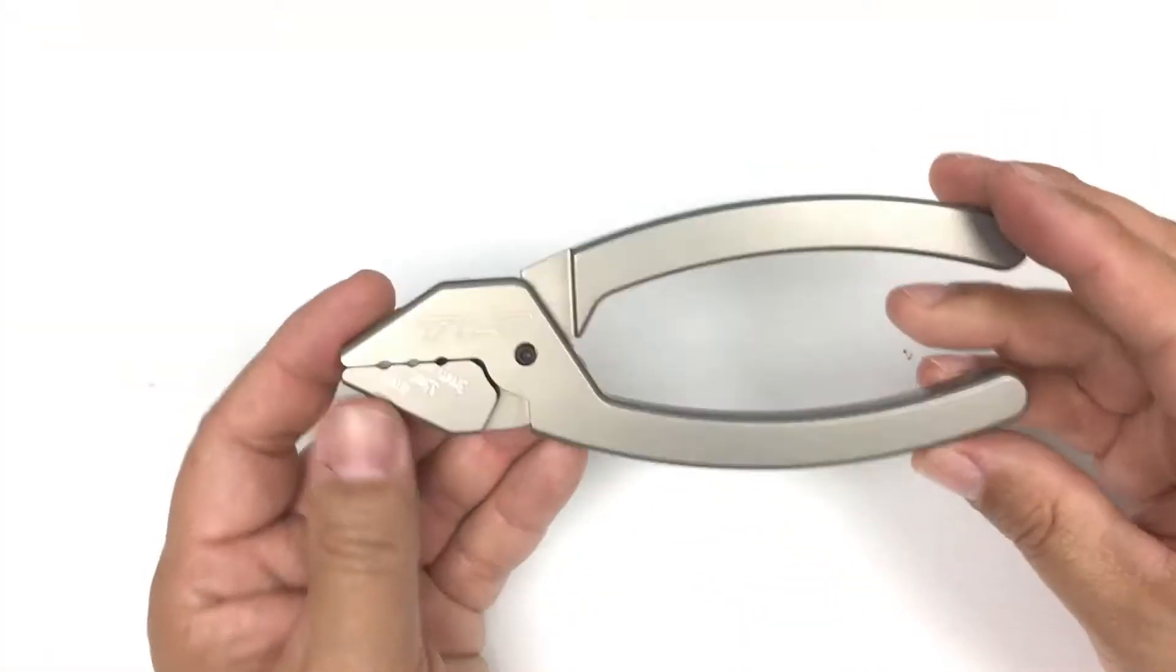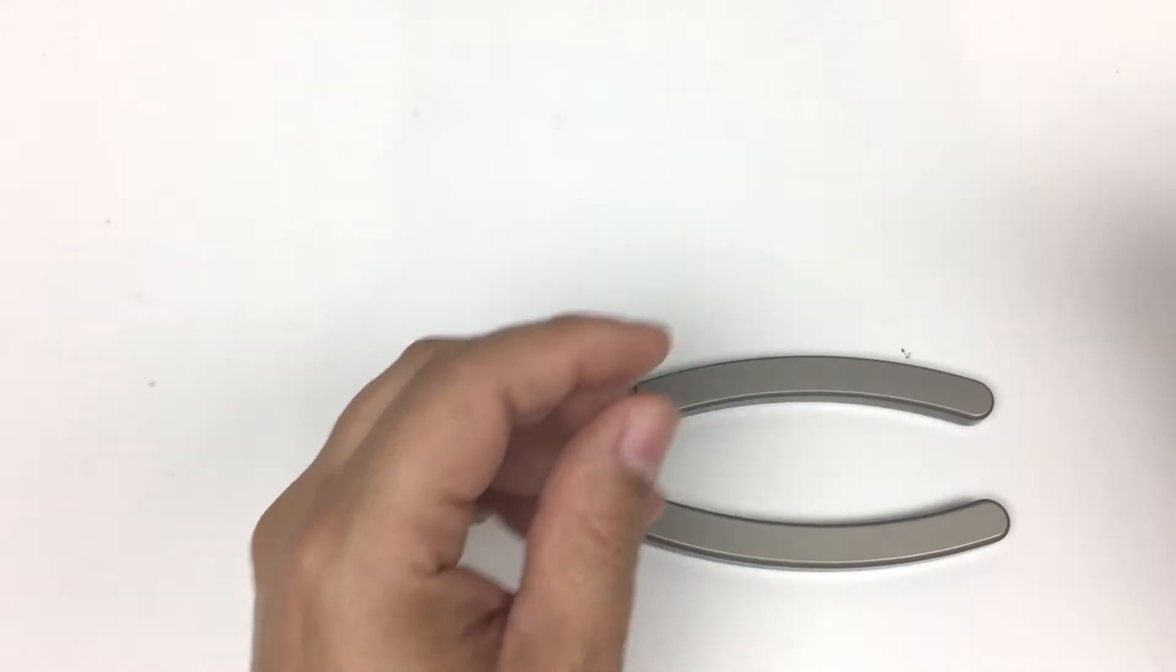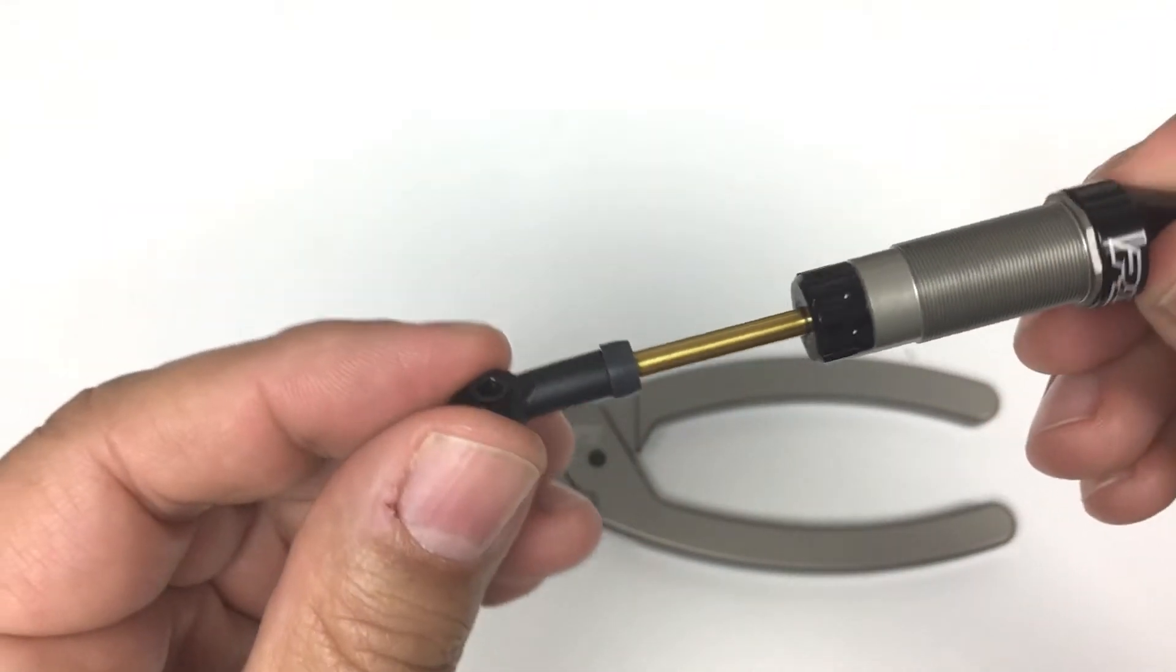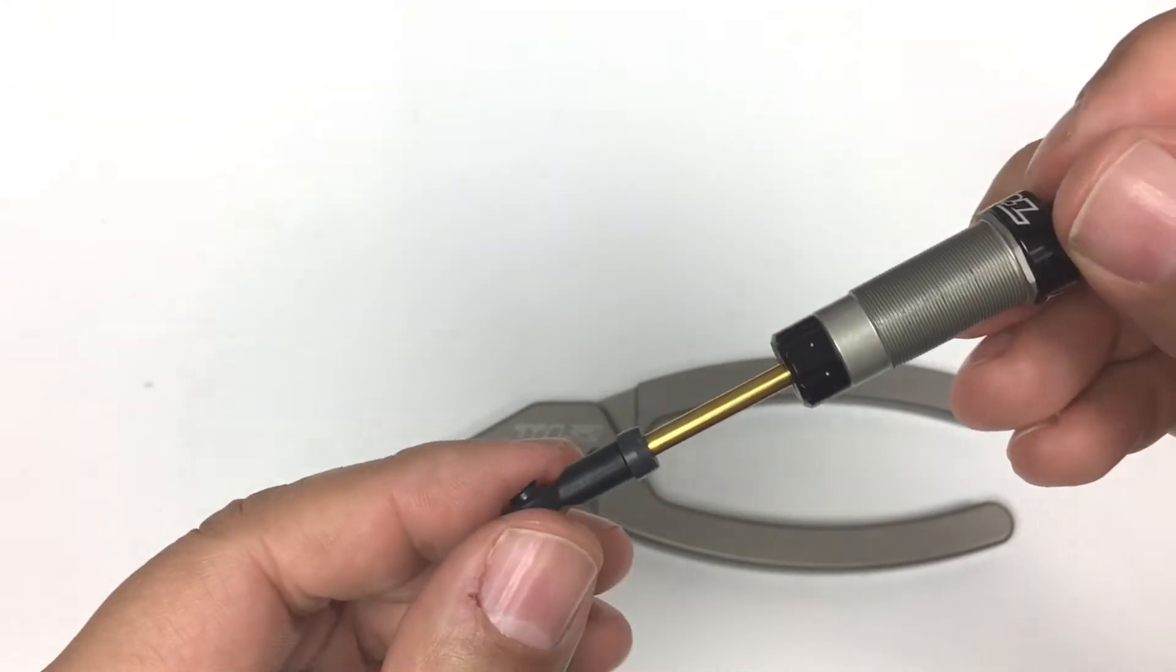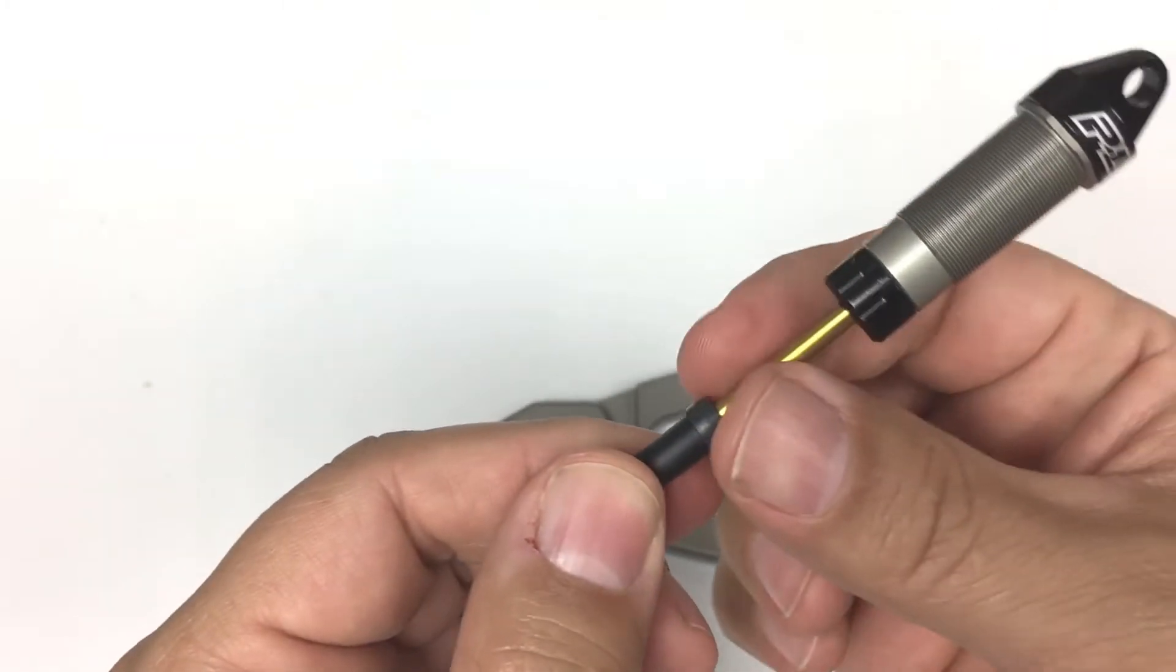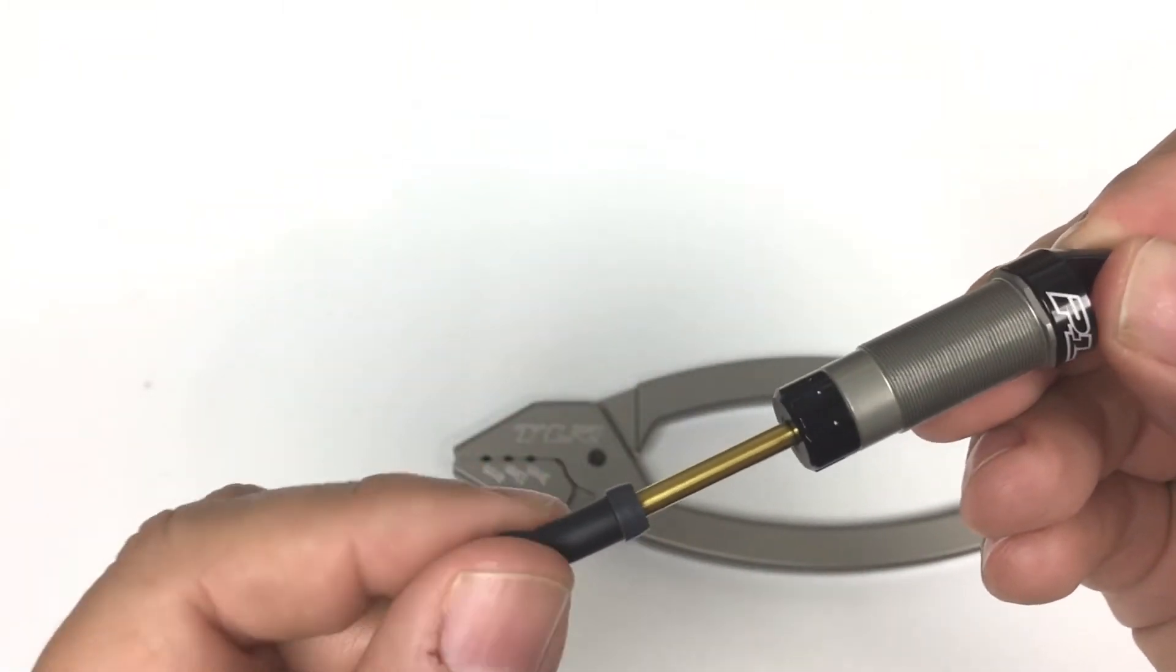I also like shock shaft pliers a lot. These are a must for me. The thing with shocks is you've got a smooth shaft that has to stay smooth and nick-free, if you want the seals to keep the oil inside the shock body. And to do that, you can hold this with a pair of regular steel pliers, but the steel jaws will roughen up that surface.